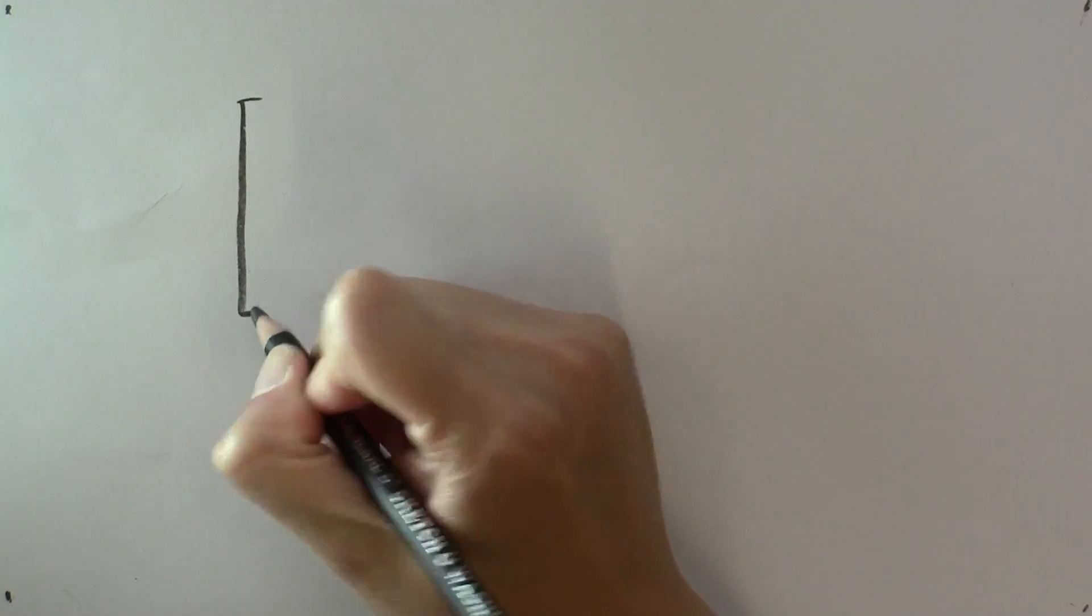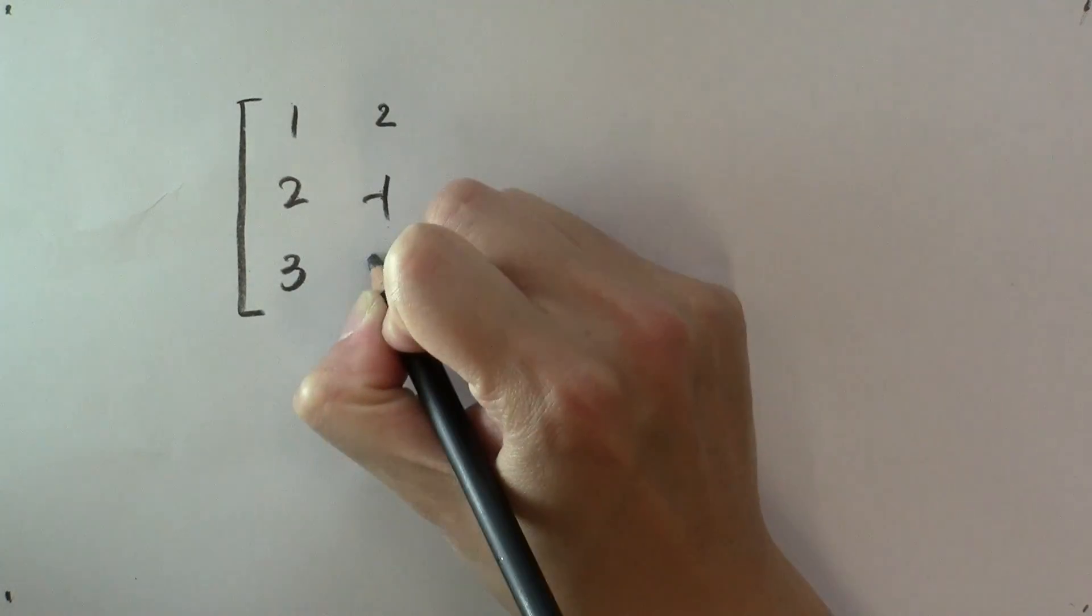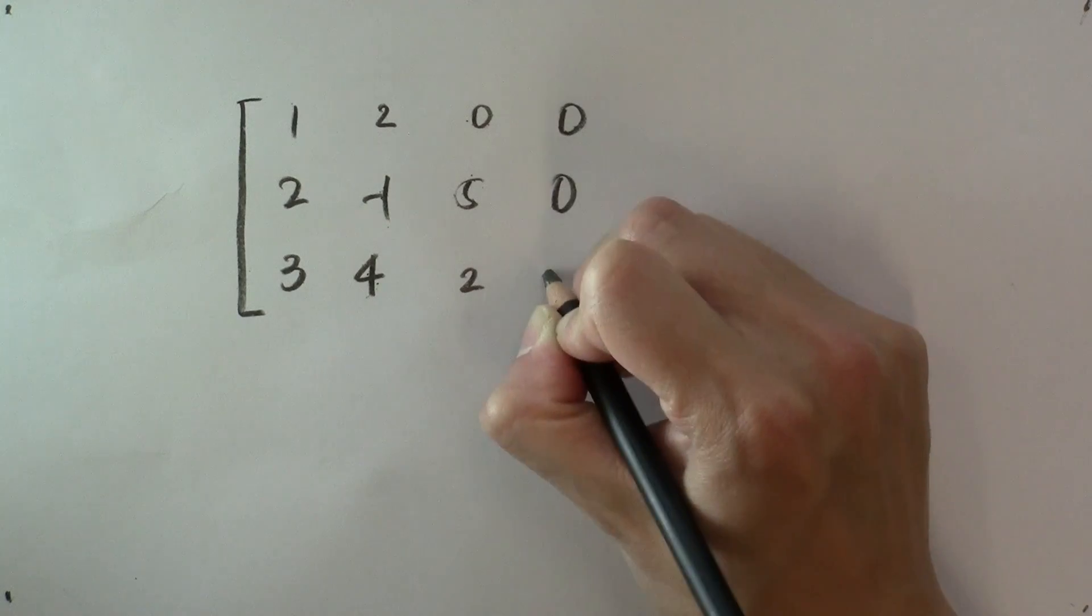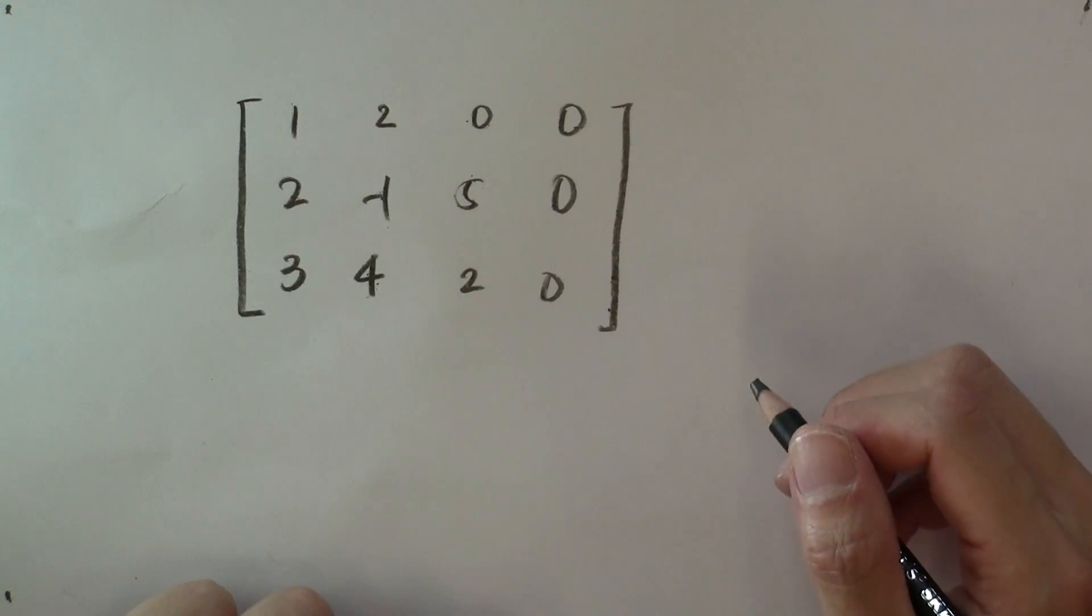And how do we solve this system? Again, we form the auxiliary matrix [1, 2, 0; 2, -1, 5; 3, 4, 2; 0, 0, 0] and use row reduction to reduce that to echelon form.